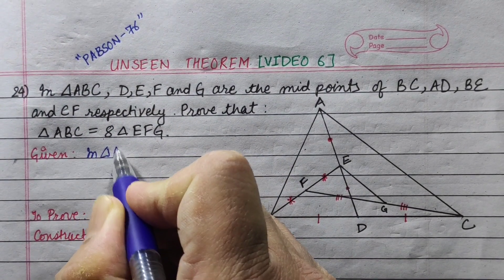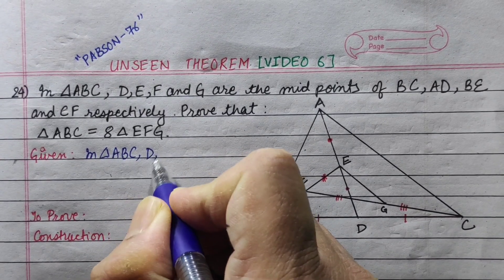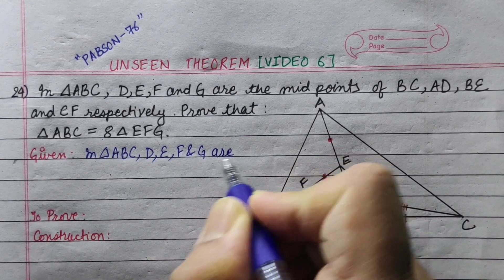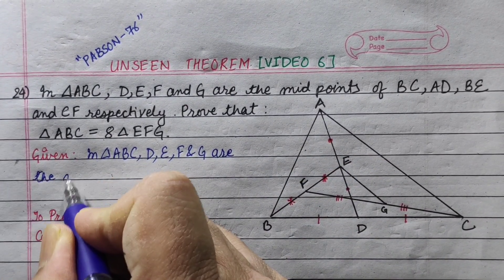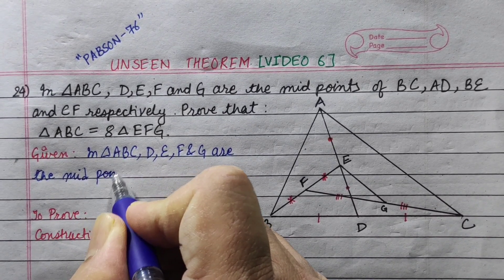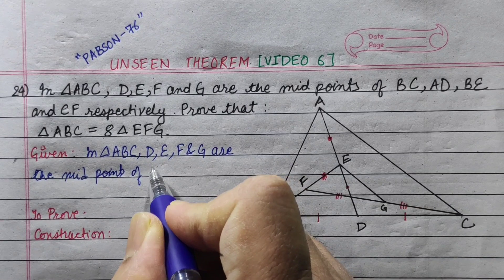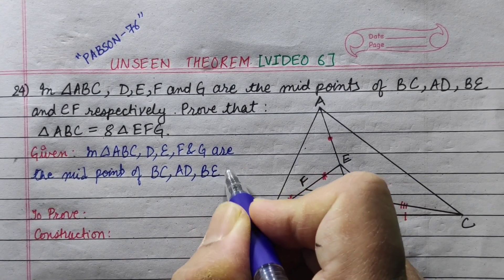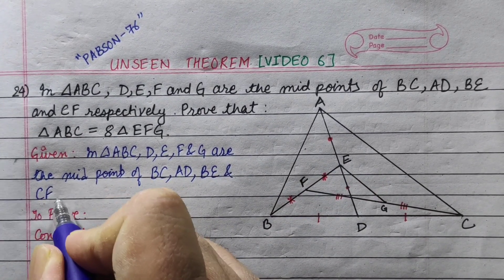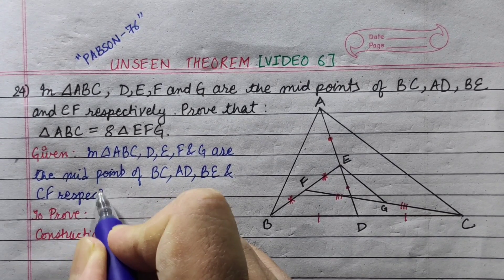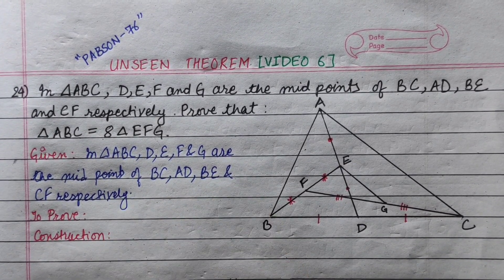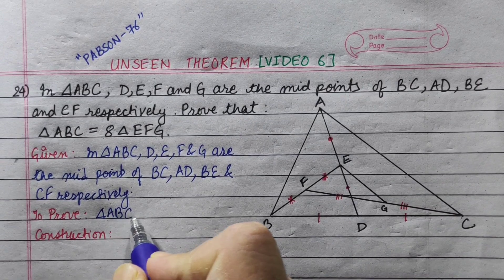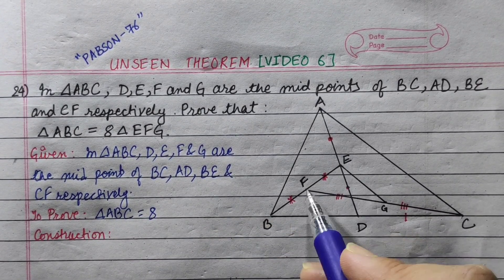In triangle ABC, D, E, F and G are the midpoints of BC, AD, BE and CF respectively. To prove: triangle ABC equals 8 times triangle EFG.